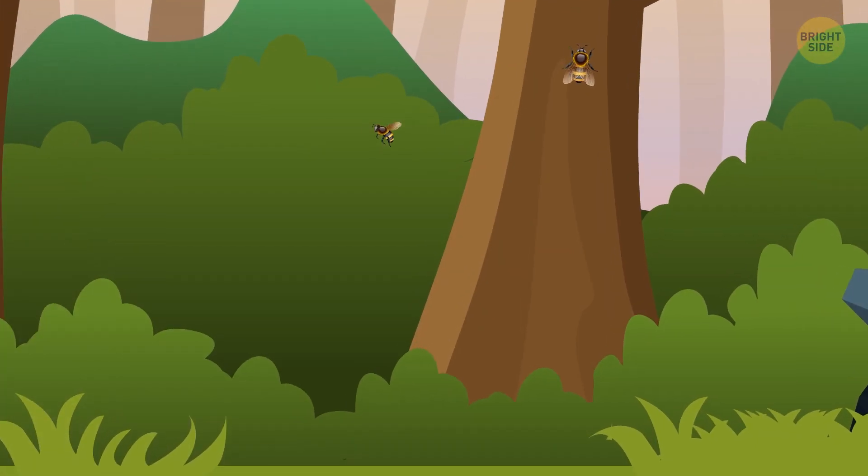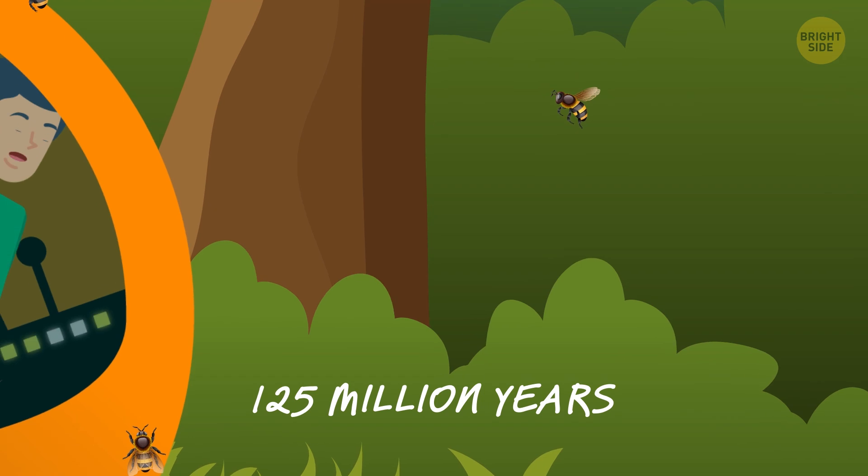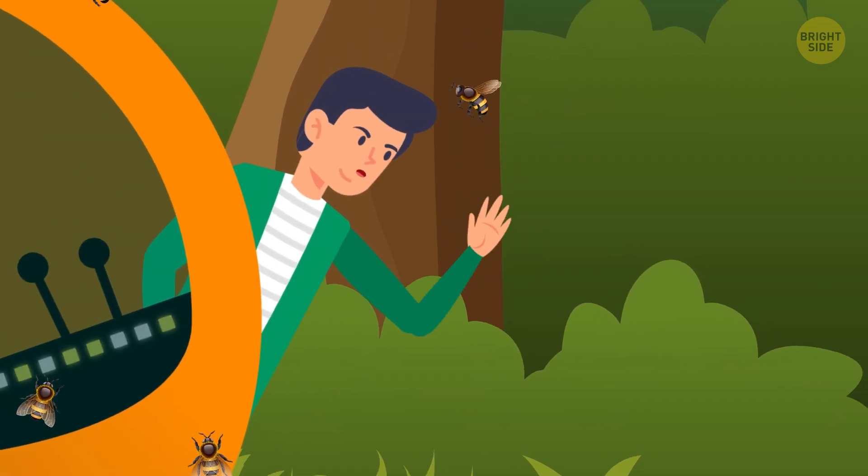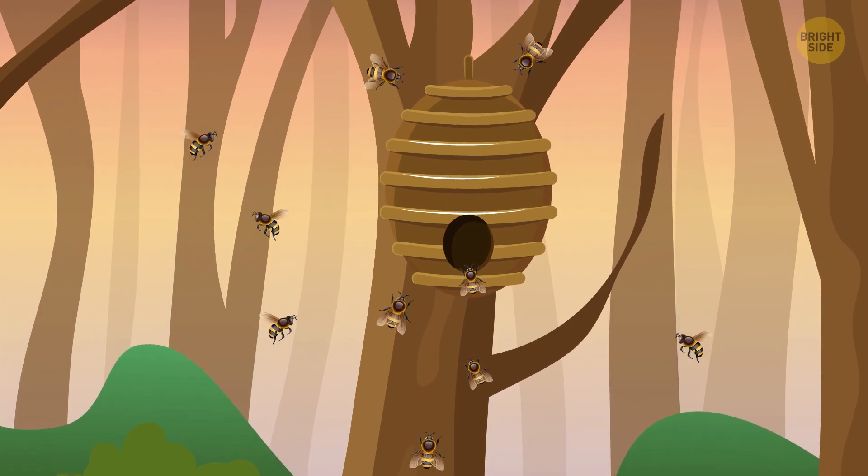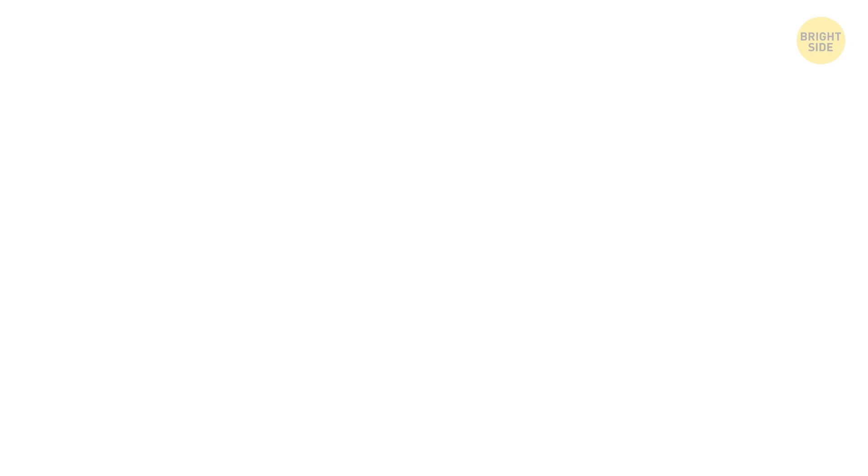When Sam peeks out of the time machine around 125 million years ago, he almost gets bitten by one of the first bees. It has just evolved from carnivorous wasps.